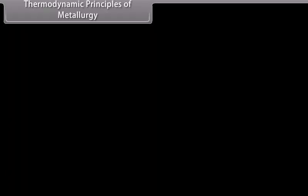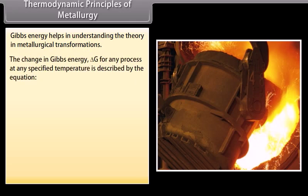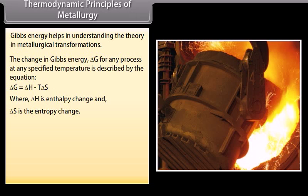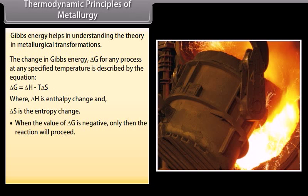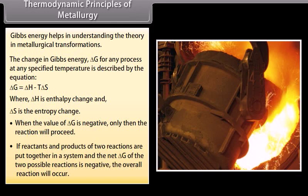Thermodynamic principles of metallurgy. Gibbs energy helps in understanding the theory in metallurgical transformations. The change in Gibbs energy ΔG for any process at any specified temperature is described by the equation ΔG = ΔH - TΔS, where ΔH is enthalpy change and ΔS is the entropy change. When the value of ΔG is negative, only then the reaction will proceed. If reactants and products of two reactions are put together in a system and the net ΔG of the two possible reactions is negative, the overall reaction will occur.